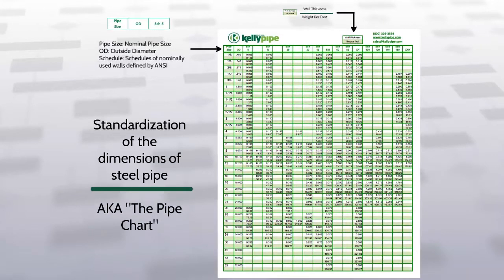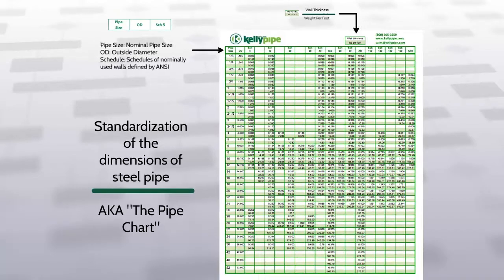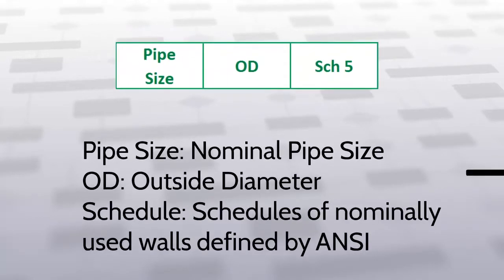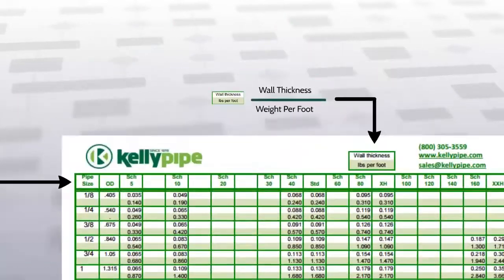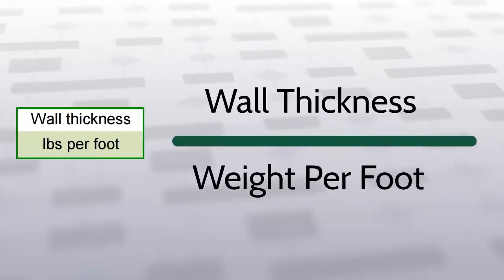Here we can find the standardization of the dimensions of steel pipe, also known as the pipe chart. On the x-axis of our pipe chart, we find the pipe size which refers to nominal pipe size, our OD which refers to the outside diameter, and our schedule which refers to the schedules of nominally used walls as defined by ANSI. The key on the top of the pipe chart lets us know where to find the wall thickness and the weight per foot, which is highlighted in green.